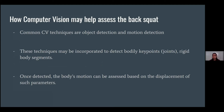How can computer vision help assess the back squat? Computer vision is an interdisciplinary scientific field that deals with how computers can gain high-level understanding from digital images or videos. Common CV techniques are object detection and motion detection, already prominently used in applications like Tesla's self-driving cars or surveillance cameras.